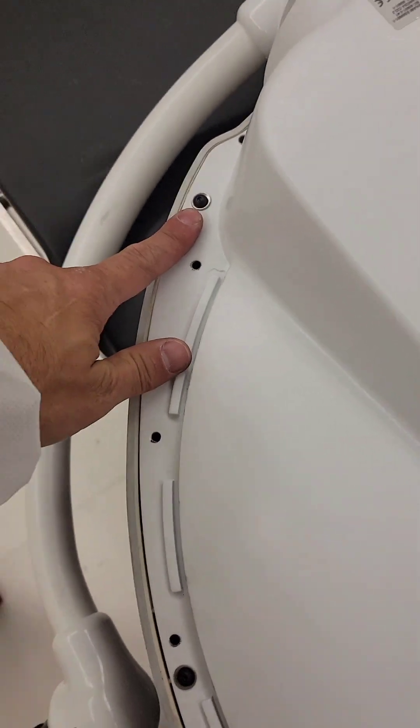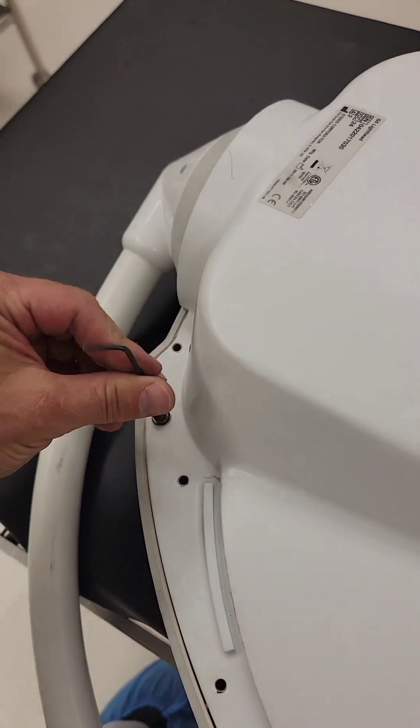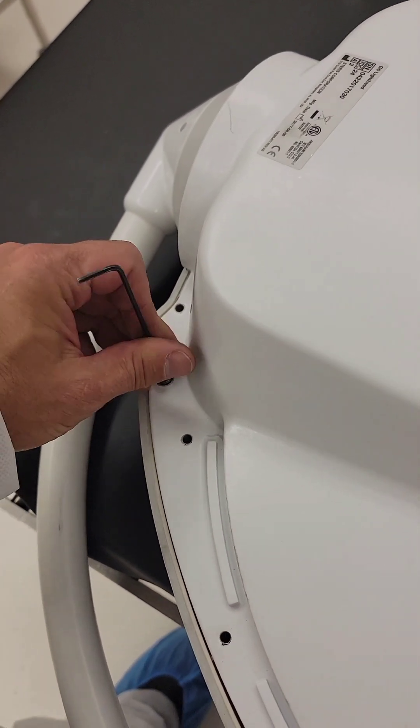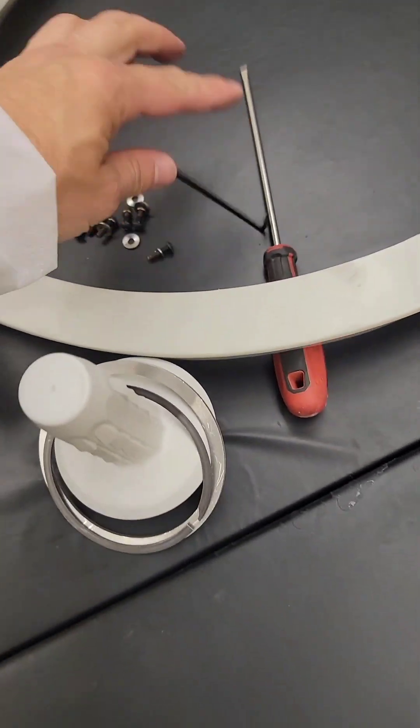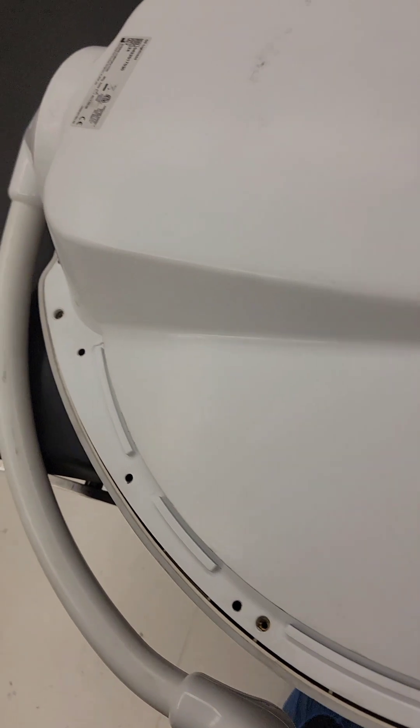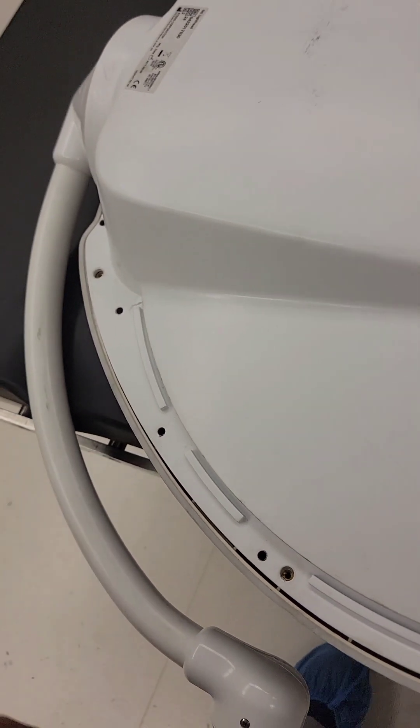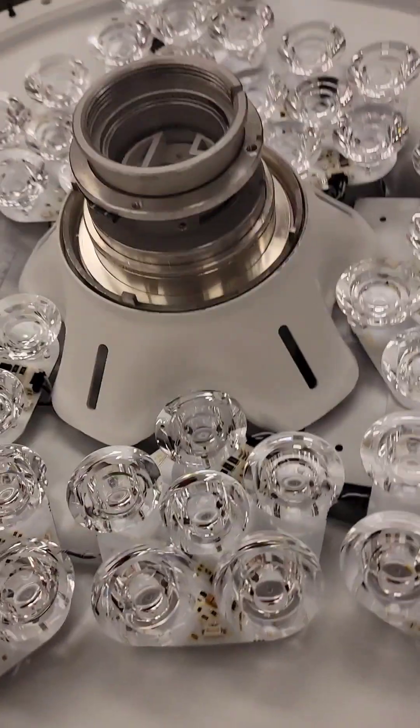These seven screws right here. There's others like these. Same Allen key as before. And there we go, now they're all off. Now I'm going to pull the lid apart. Comes off pretty easy.